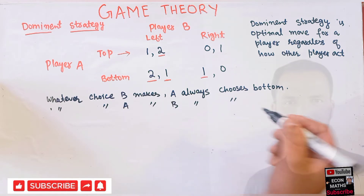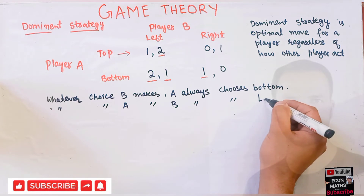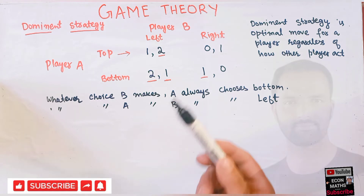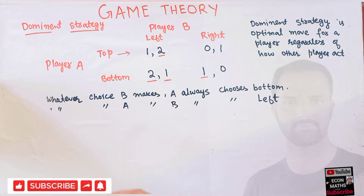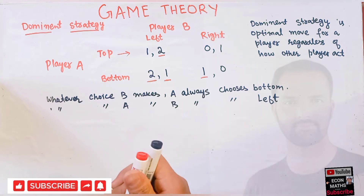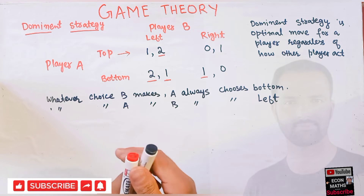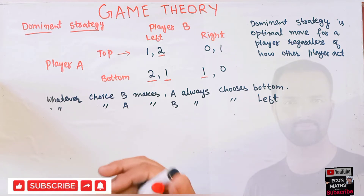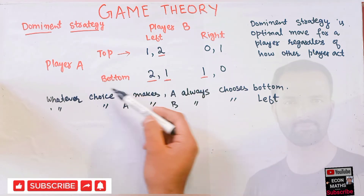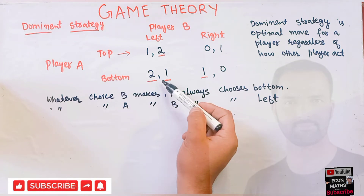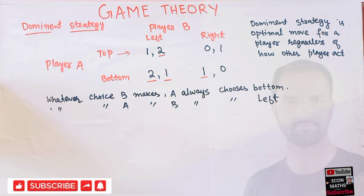Player B always chooses left. So we say in this game both players have what we call a dominant strategy. It is very simple: if there is a dominant strategy for each player in the given game, then we would predict that it would be the outcome of the game. That means in this case the outcome of the game will be two-one — player A will choose bottom and player B will choose left.